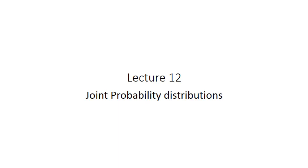If you have any questions, you can email me. Now we are going to move to the case where we have more than one random variable, whether discrete or continuous. And that's what's called joint probability distributions.